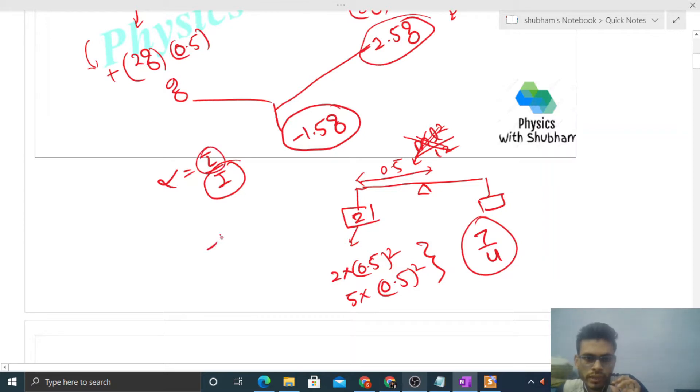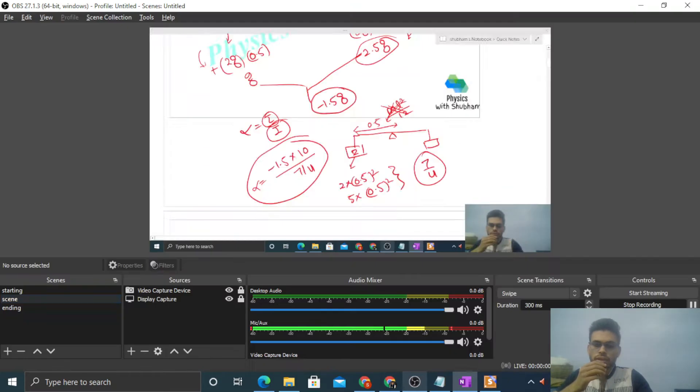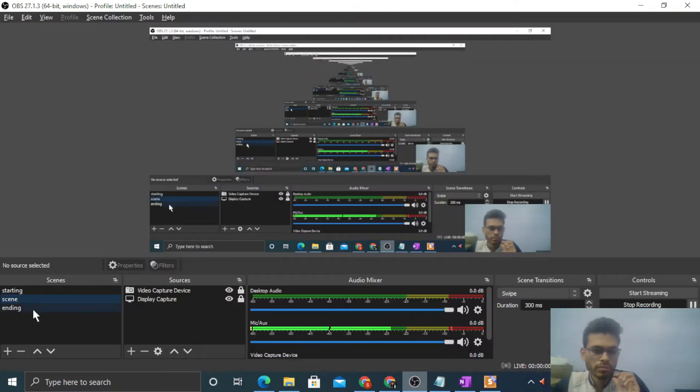So torque minus 1.5 into g value approximately 10, divided by I that is 7 by 4. This is the initial value of angular acceleration. So I think you have understood. Let me know if you still have any confusion. We can discuss further. Okay guys, keep working hard. Best of luck, bye.